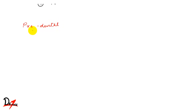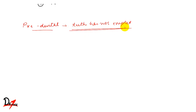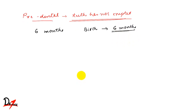First, we'll talk about the pre-dental period. The pre-dental period means our teeth have not erupted yet. The development might have finished, but the teeth have not erupted. This period usually lasts for six months, from the birth of the child until six months old. After six months, ranging from six to nine months, you have the central incisor erupting.